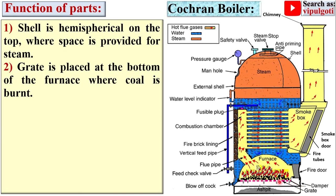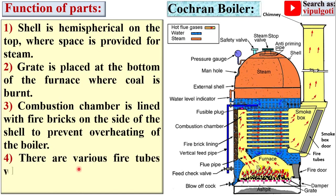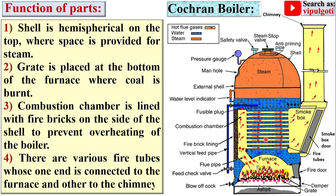The combustion chamber is lined with fire bricks on the side of the shell. You can see the combustion chamber and the fire brick lining on the side of the shell, which is provided to prevent overheating of the boiler, because the temperature of the flue gases is very high. There are also various fire tubes whose one end is connected to the furnace and the second end is connected to the chimney.